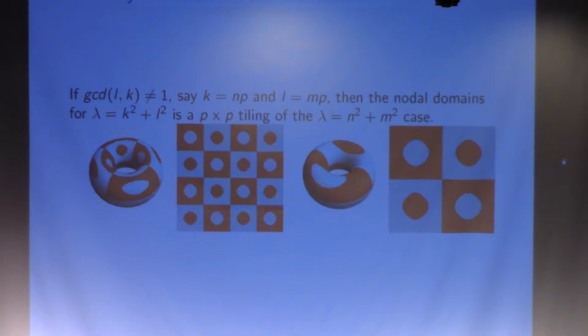Just because of the periodicity of these functions, you can show that if k and l have a common factor, then you actually just get a tiling of the reduced case in your nodal domain. Here we have k and l are one and three on the right, and two and six on the left, and we see that it's just a two by two tiling of the one and three case.